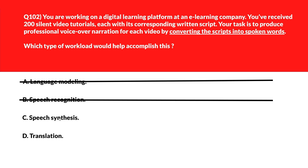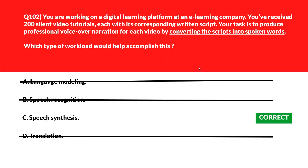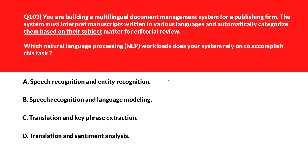Option C says Speech Synthesis — as the name suggests, 'synthesis' means making, so speech synthesis converts available script text into audio narration, matching the requirement to create voiceovers from written content. Option D says Translation — translation changes language but doesn't convert text into audio format, so that's wrong. The official documentation states that text-to-speech enables applications to convert text into human-like synthesized speech, also known as speech synthesis. We'll lock option C, Speech Synthesis, as the right answer.